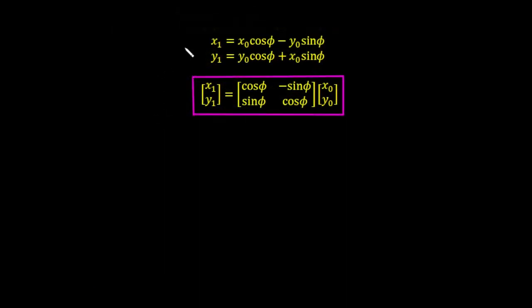Rewriting the two results: x1 equals x0·cos(φ) minus y0·sin(φ), and y1 equals y0·cos(φ) plus x0·sin(φ). When we rewrite that in matrix form, we get the rotation matrix. Now that we have the rotation matrix, we can go ahead in the next video and start looking at the CORDIC algorithm. Thank you for listening — see you in the next video.